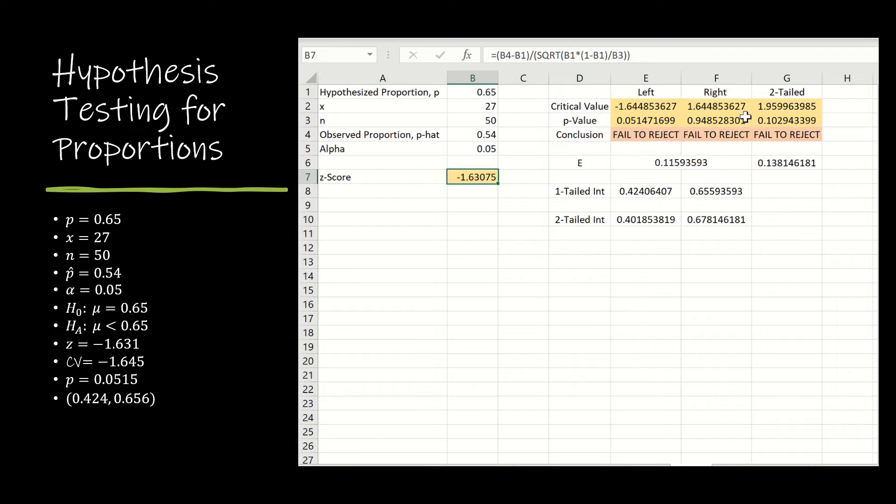Then we find our left and right critical values, which are opposites of one another. For a left value, I need alpha to the left. For a right value, I need 1 minus alpha to the left. For the p-value, we're going to take norm s dist. For the left, it's just norm s dist. For the right, it's 1 minus norm s dist. Feel free to include the reject/fail to reject if you're a math nerd like me, or just do the comparisons yourself.